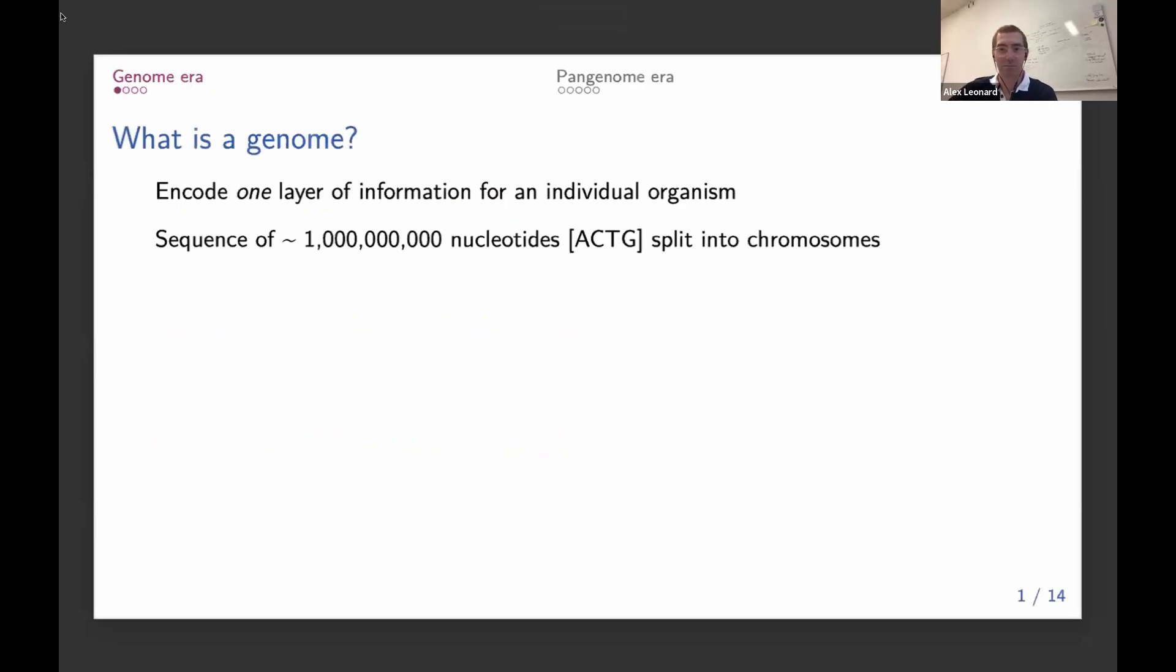The first thing to really talk about is that genomes are just one layer of information that represent an individual. Generally, for mammals, we're talking about something like billions of nucleotides split into different chromosomes.